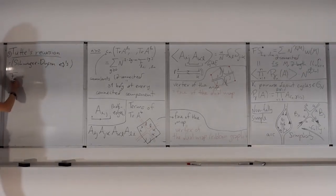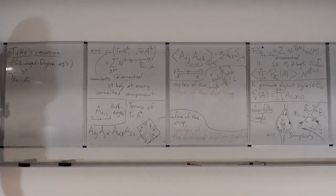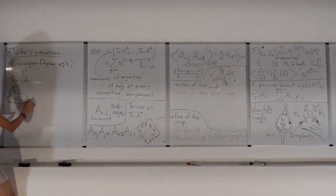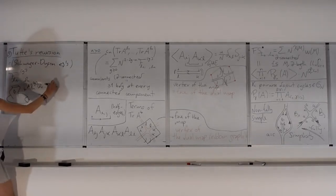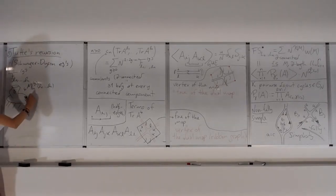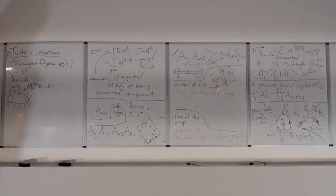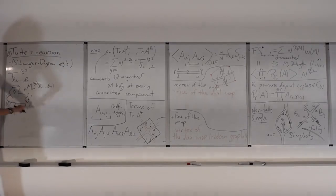I want to start with the generating series of maps with fixed length and genus G. I take any map and this is the first boundary. I took the convention that the boundary sits on the left of the root. We want to separate all the possible cases of what this first edge can be.